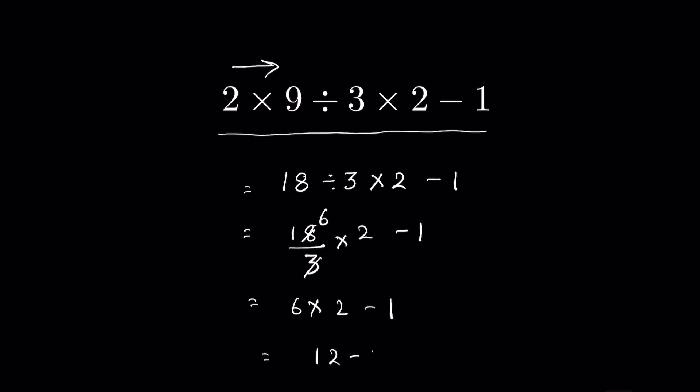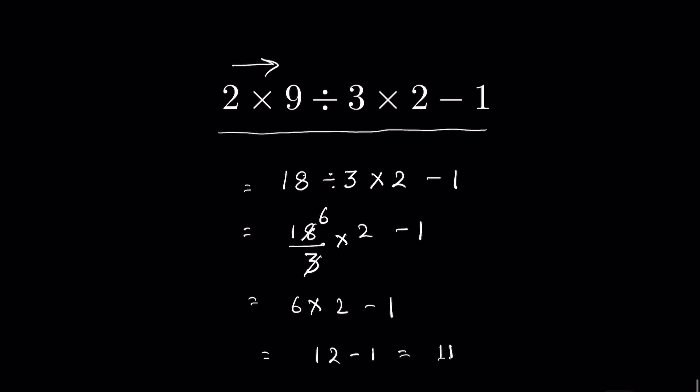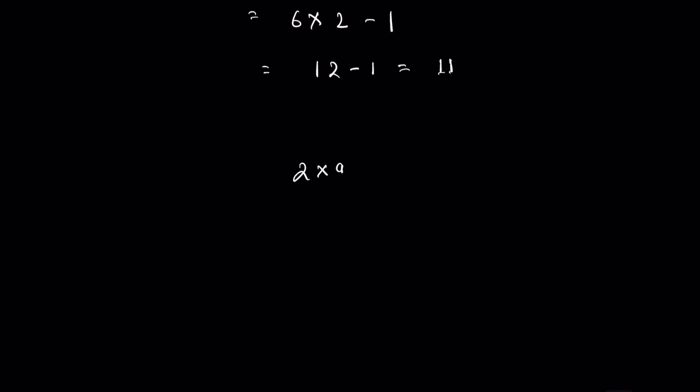Many are interpreting this question wrong. They are writing it as 2 multiplied by 9 as a group, then division, and then 3 multiplied by 2 minus 1, putting it like this and then minus 1. But this is not the way.